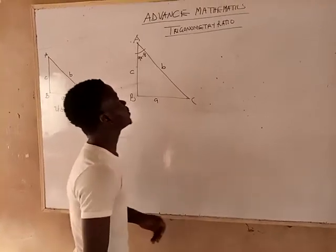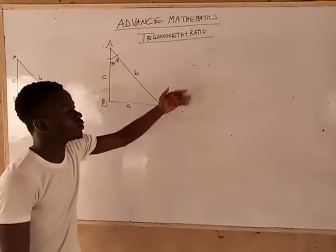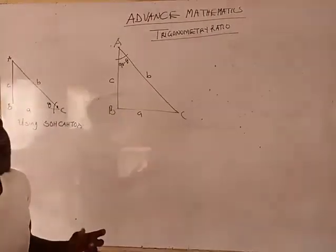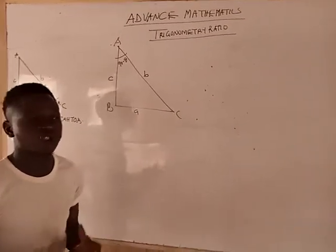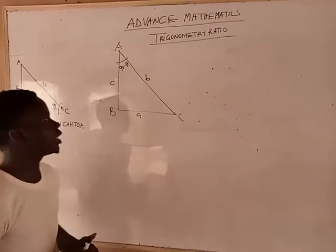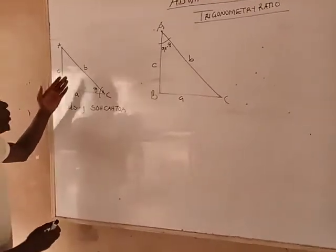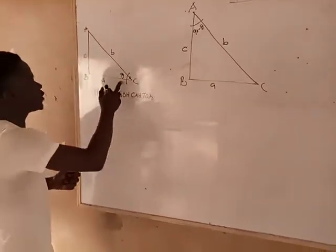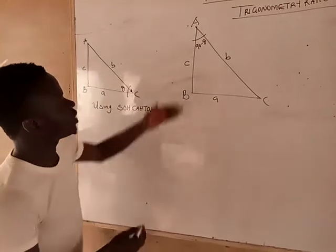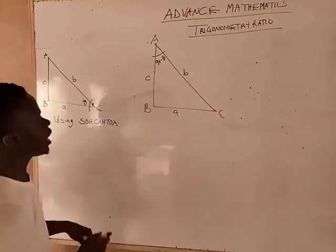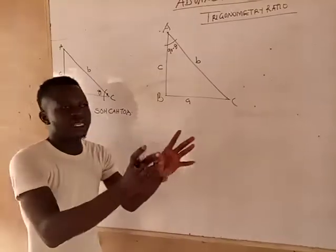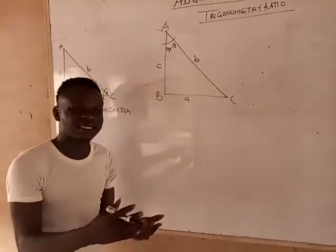Today we are talking about trigonometric ratios and we will be using particular triangles to derive some equations. Now looking at this diagram here, we are having the angle theta and the angle 90 minus theta. That is, the sum of angles in a right angle triangle is 90 degrees.